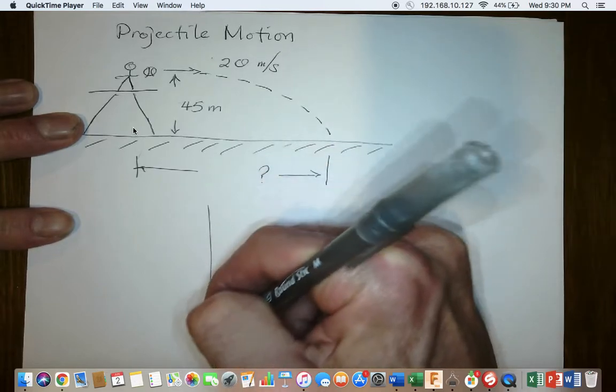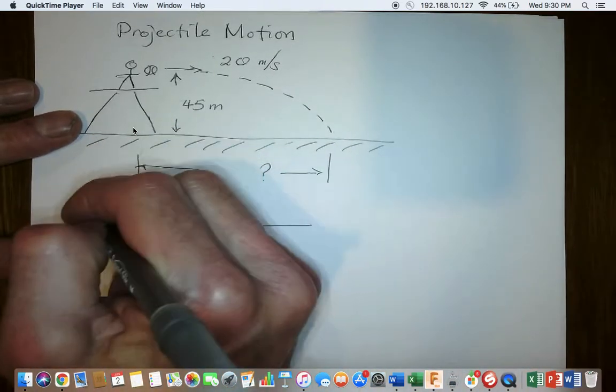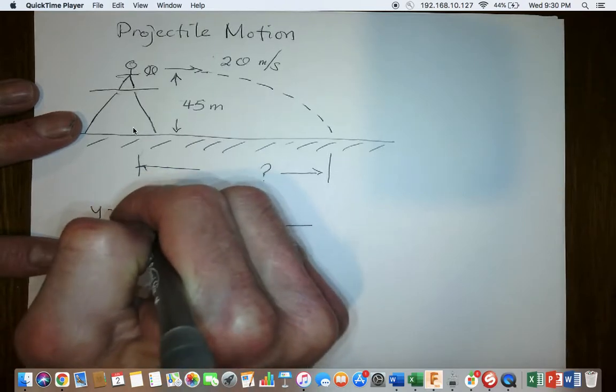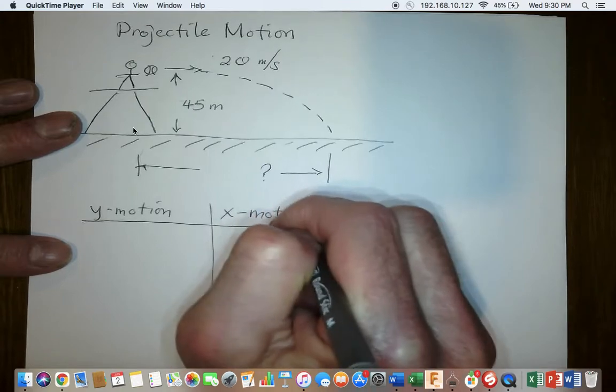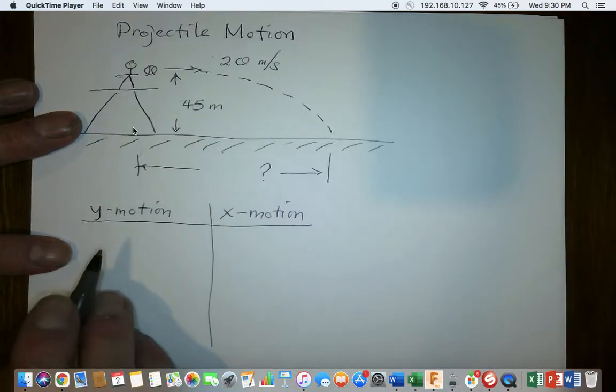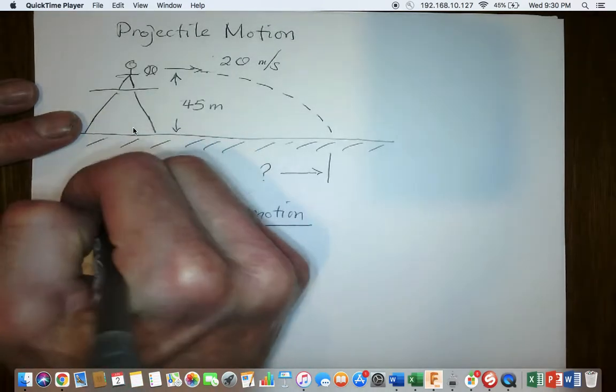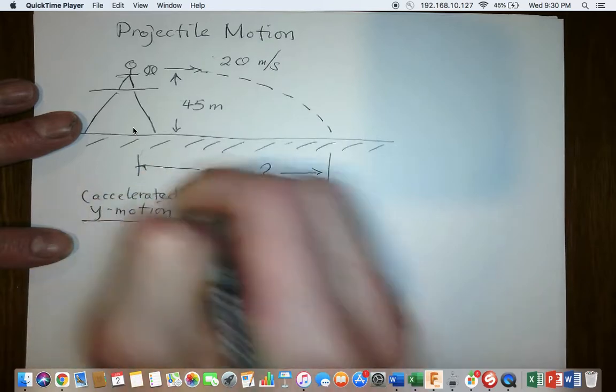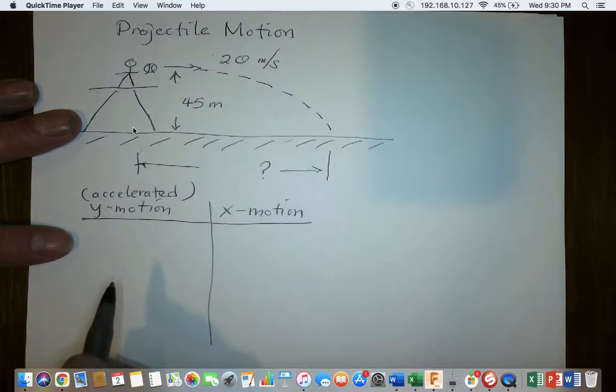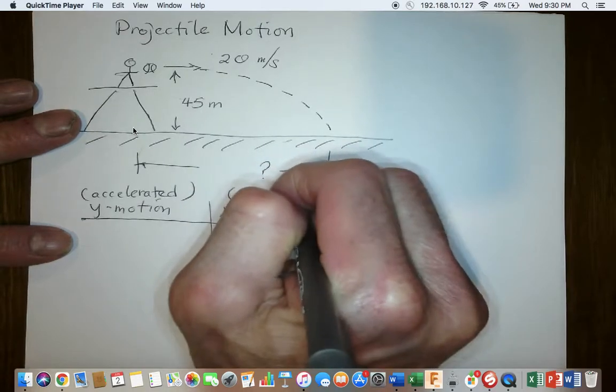That table has both the Y motion, and I'm going to put that first, separated from the X motion. Y motion, because the ball is freely falling, is accelerated motion. Whereas X motion, we're assuming no air resistance, is going to be a constant velocity motion.